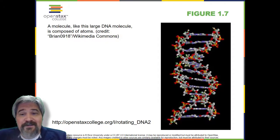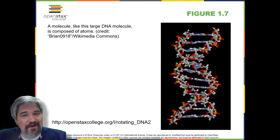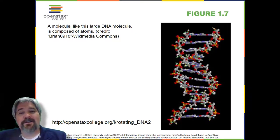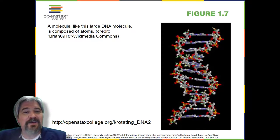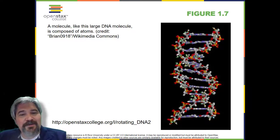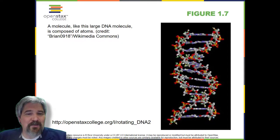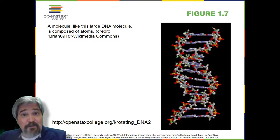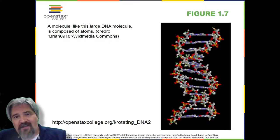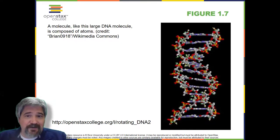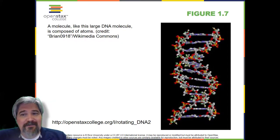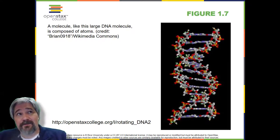Some organisms consist of a single cell and others are multicellular. Cells are classified as prokaryotic or eukaryotic. Prokaryotes are single-celled organisms that lack organelles surrounded by a membrane and do not have nuclei surrounded by nuclear membranes. In contrast, the cells of eukaryotes do have membrane-bound organelles and nuclei. Prokaryotes essentially means 'first cell' and includes archaea and bacteria. Eukaryotes means 'new cells' and includes all cells that have organelles — that is one of the most fundamental differences.